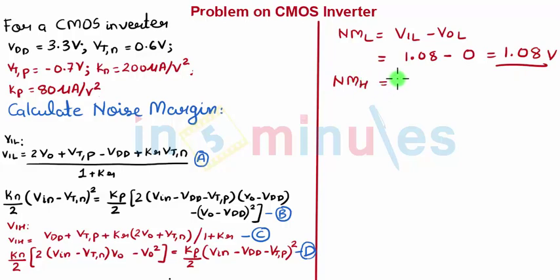NMH, which is equal to VOH minus VIH. We know that VOH is equal to VDD, which is nothing but 3.3 minus VIH, which equation 7 gave us as 1.55, which is equal to 1.75 volts. So this gives me the value of NML and NMH.